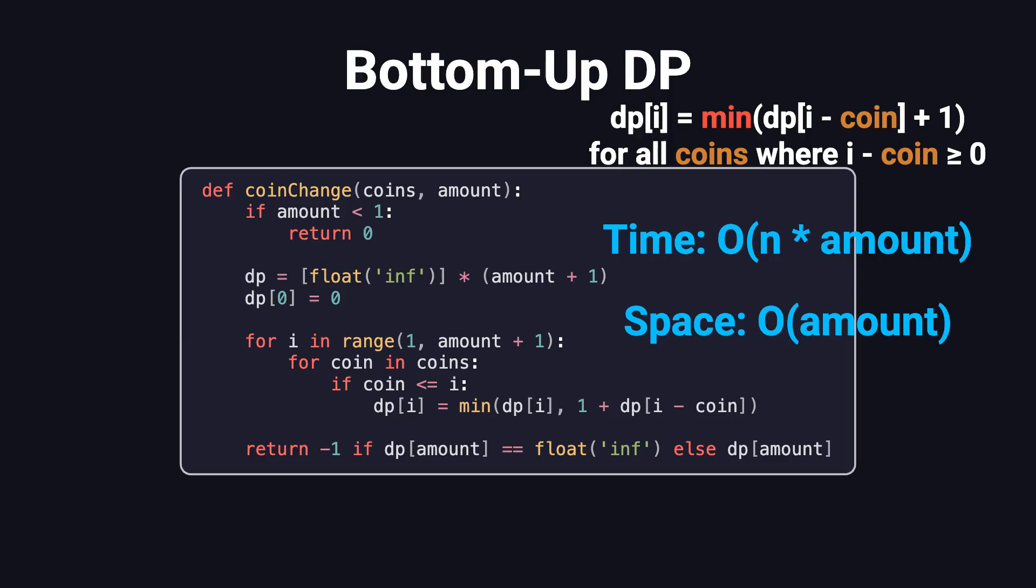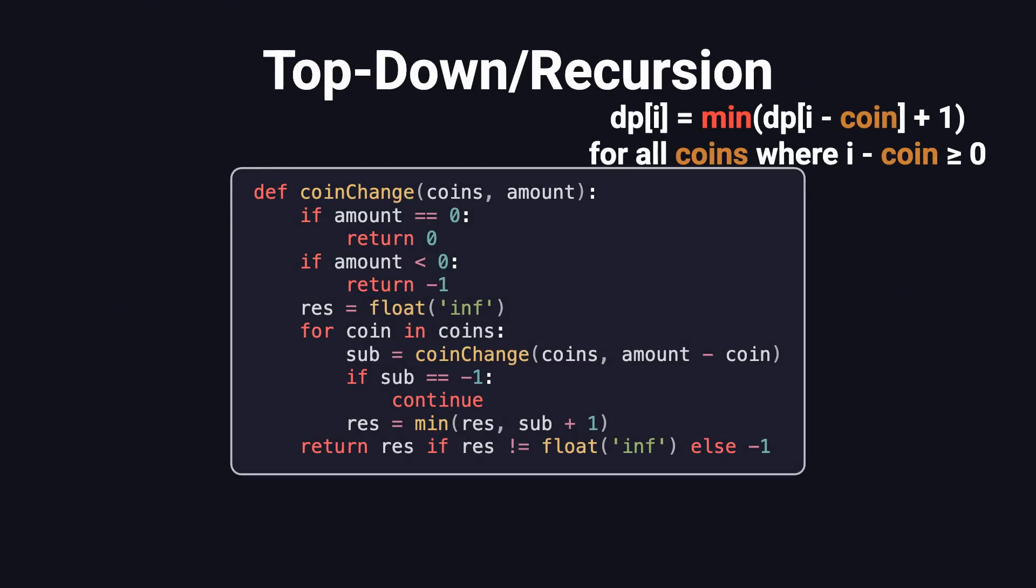Since this is a dynamic programming problem, there's also a top-down solution using recursion. The idea is simple. For a given amount, try each coin, and recursively compute the fewest coins needed for the remaining amount. Then, return the minimum. If the amount is 0, return 0. If it's negative, return minus 1 to indicate failure.